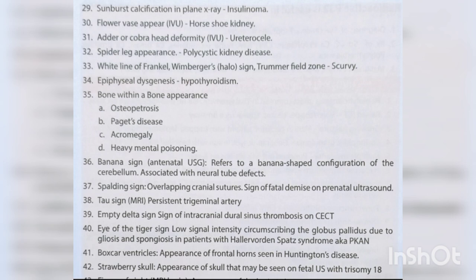Banana sign on antenatal USG refers to a banana-shaped configuration of the cerebellum associated with neural tube defects. Spalding sign — overlapping cranial sutures, sign of fetal demise on prenatal ultrasound. Tau sign — MRI persistent trigeminal artery. Empty delta sign — sign of intracranial dural sinus thrombosis on CECT.